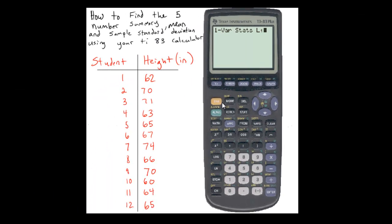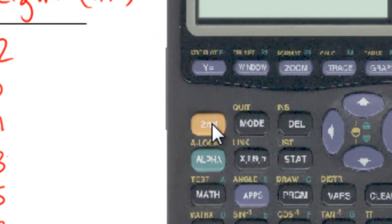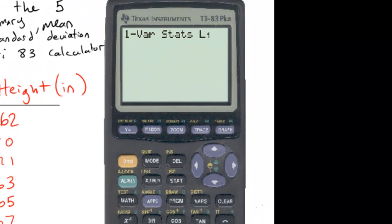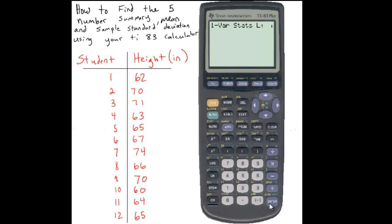Also you can find that list by hitting second stat or list and then hitting enter on list one. I don't need to type list one so I'm going to delete it out. And then I'm just going to hit enter.